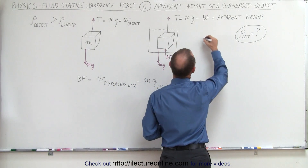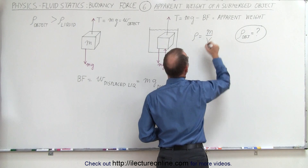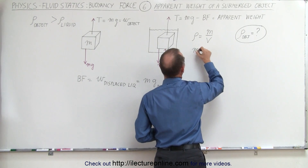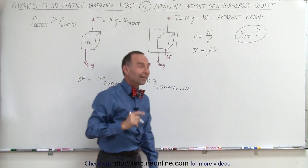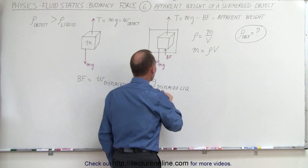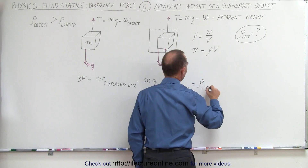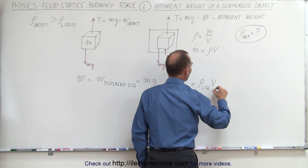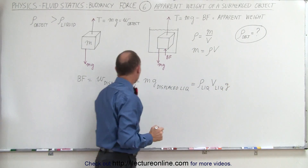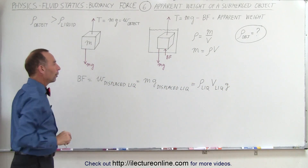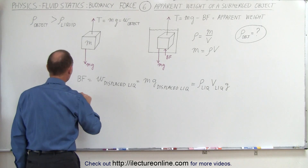Using the equation that density equals mass divided by volume, the mass can be written as the product of density times volume. So the weight of the displaced liquid can be written as the density of the liquid times the volume of the displaced liquid times g, and that is going to be equal to the buoyancy force.